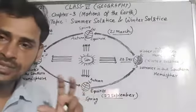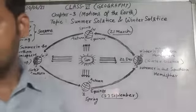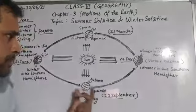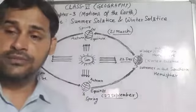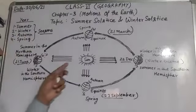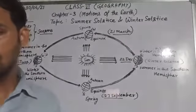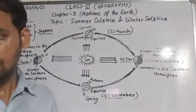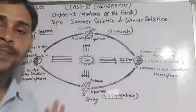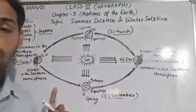Always remember that on 21st June, the longest day and shortest night occur. In the Southern Hemisphere, all these conditions are just reversed — opposite conditions will be there. In the Southern Hemisphere, there will be Winter because it doesn't get heat and light continuously. Nights are longer than days in Winter season. That is the reason this position is called Summer Solstice.